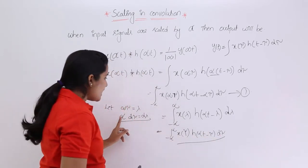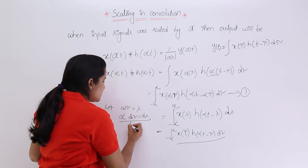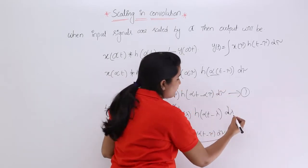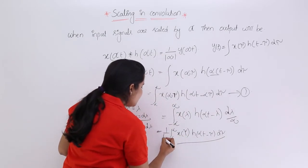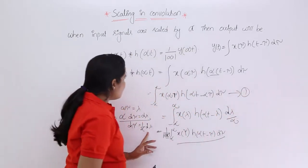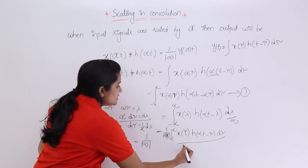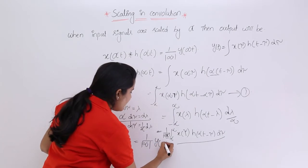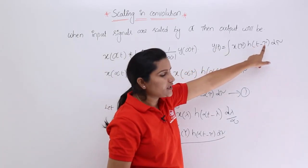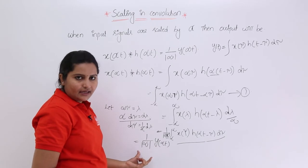We must account for the alpha factor: when writing d·tau in terms of d·lambda, d·tau equals (1/alpha)·d·lambda, so when taken out of the integration this contributes a factor of 1 over modulus of alpha. Therefore, the convolution of x(alpha·t) with h(alpha·t) equals (1/|alpha|)·y(alpha·t). Substituting alpha·t in place of t in the general convolution gives x(tau)·h(alpha·t minus tau) d·tau, which confirms the result.